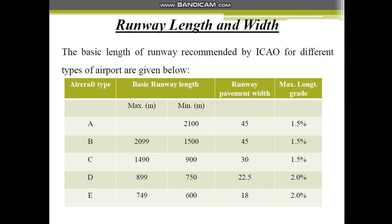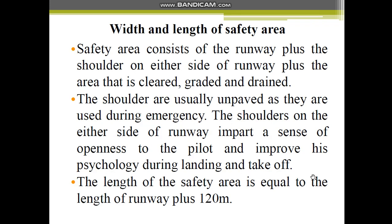Depending upon the runway length and width, airport types are divided into 6 categories: A, B, C, D, and E. Just go through this table where the basic runway length for a particular type of airport — the maximum and minimum basic runway length — is given, along with the runway pavement width, the maximum longitudinal gradient, and the width and length of the safety area.